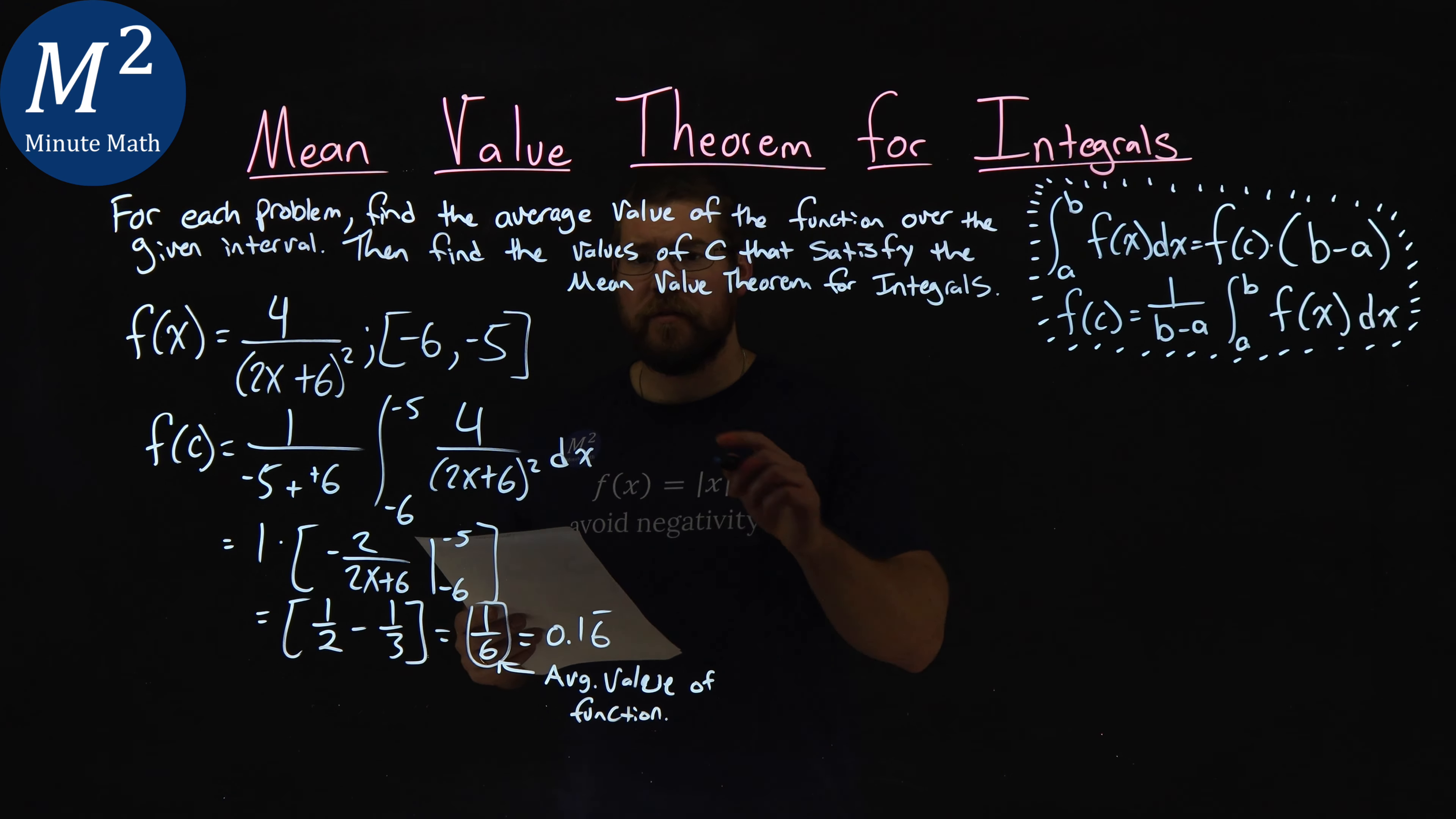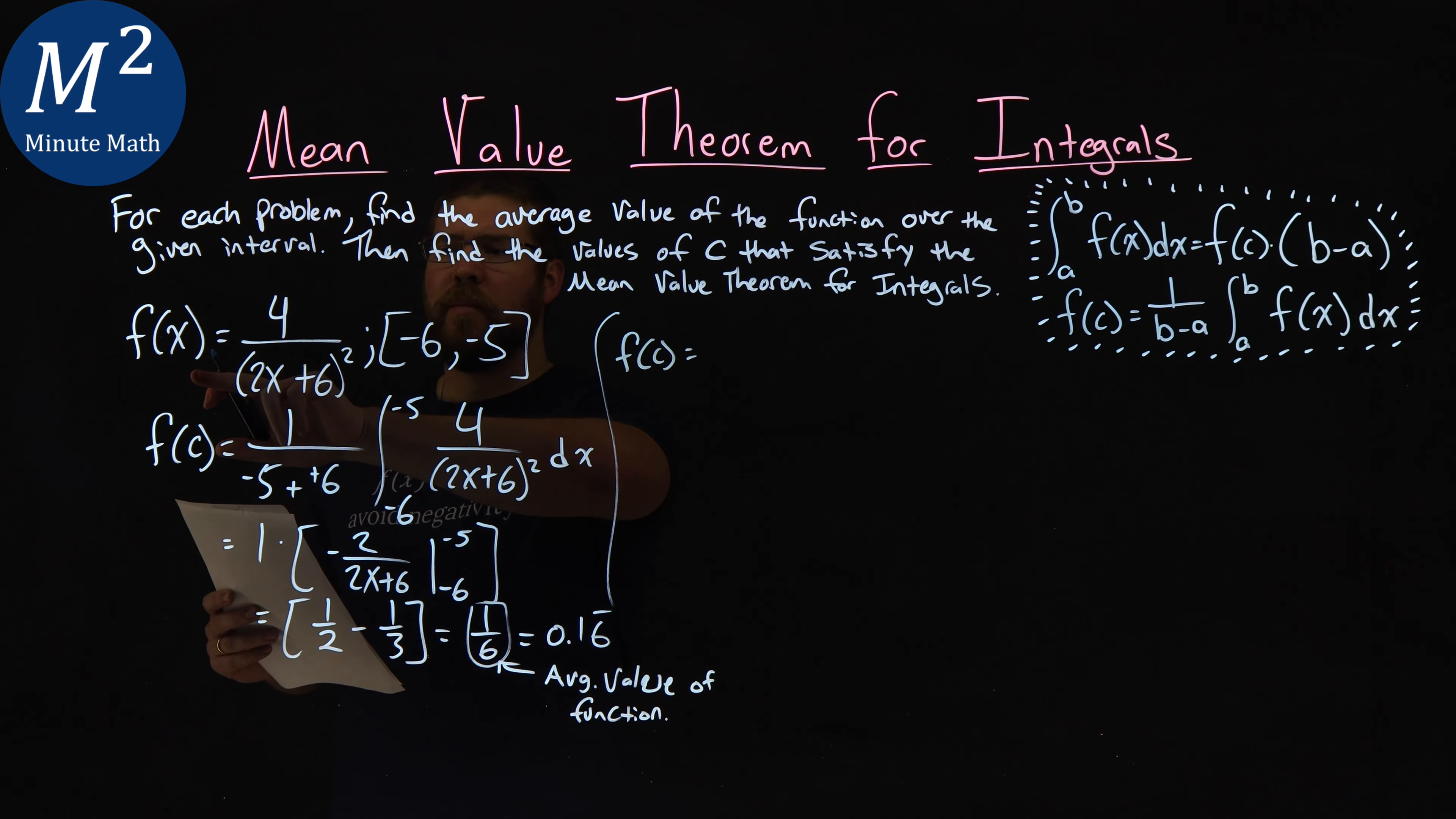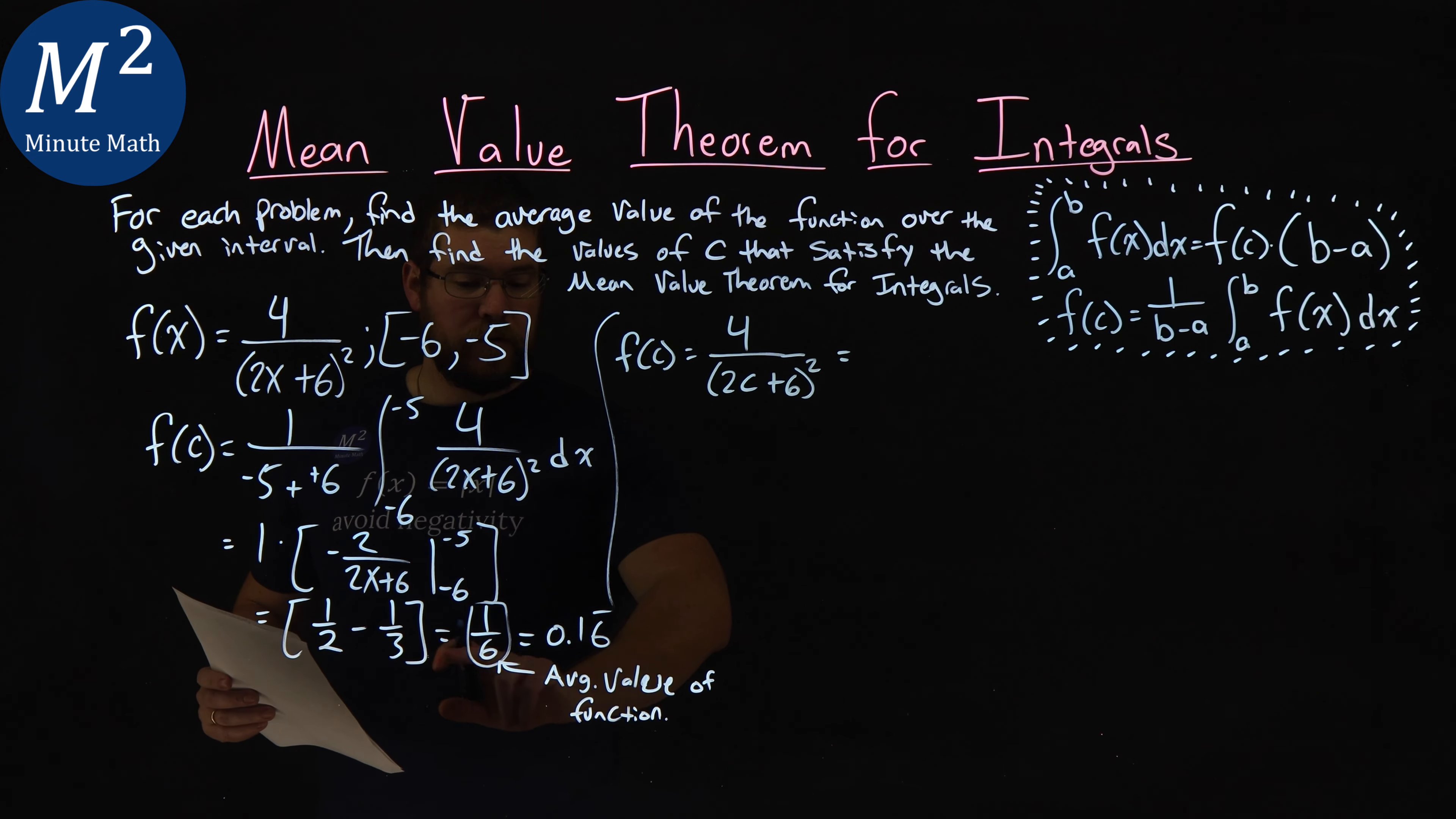So now we want to find the value of c that satisfies the mean value theorem. So I'm going to take actually what I know here and apply it. f of c is equal to, well, I plug c into my function, right? 4 over 2 times c plus 6 squared. And we found that that f of c is equal to 1 sixth.